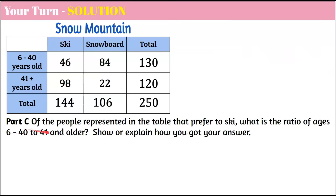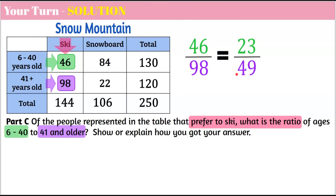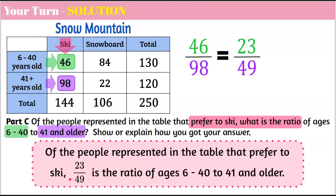Here's part C: of the people represented in the table that prefer to ski, what is the ratio of ages 6 to 40 to ages 41 and older? We're talking just the skiing group. Ages 6 to 40 who ski is 46; ages 41 and older who ski is 98. So the ratio is 46 to 98. Simplifying by dividing both by 2, we get 23 to 49. The ratio of ages 6–40 to 41 and older among skiers is 23 to 49.